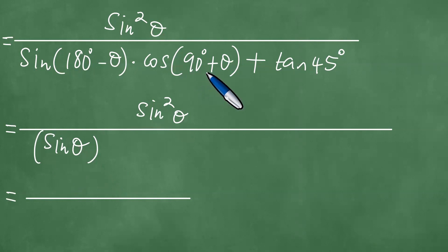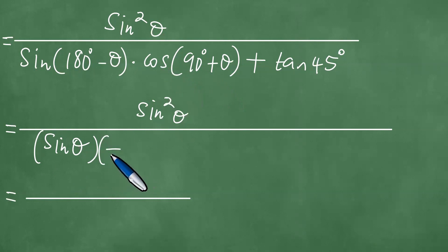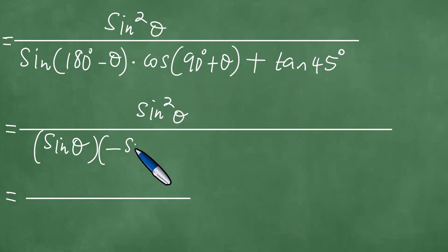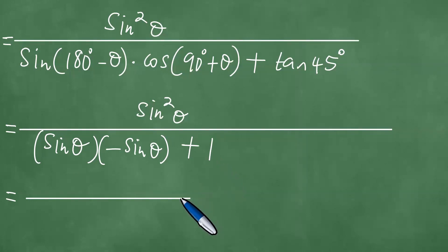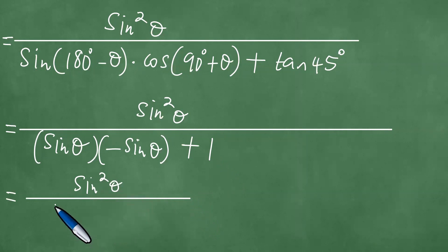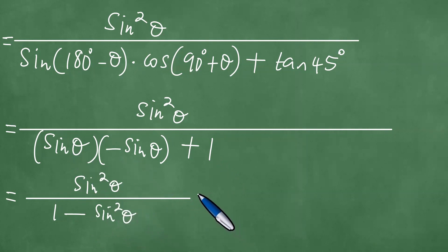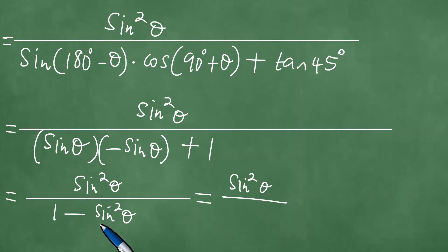90 plus theta is also in the second quadrant, where cosine is negative. But there's a co-function change because at 90 degrees you remove the 'co' and you're left with sine theta. And the tangent of 45 degrees is actually equal to 1. So the numerator remains as sine squared theta, and the denominator becomes 1 minus sine times sine, which is sine squared theta.